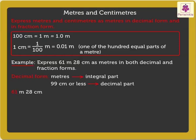Thus, 61 is the integral part and 28 is the decimal part. So, 61 meters 28 centimeters is expressed as 61.28 meters as a decimal.